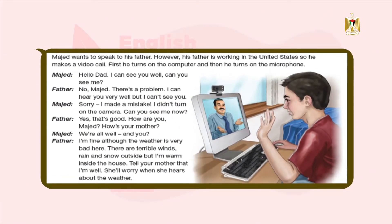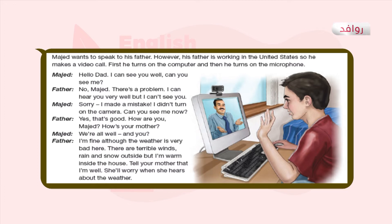Majid wants to speak to his father. However, his father is working in the United States, so he makes a video call. First he turns on the computer and then he turns on the microphone. Hello Dad. I can see you well, can you see me? No Majid, there's a problem. I can hear you very well but I can't see you. Oh sorry, I made a mistake — I didn't turn on the camera. Can you see me now? Ah yes, that's good.